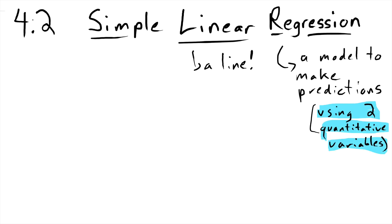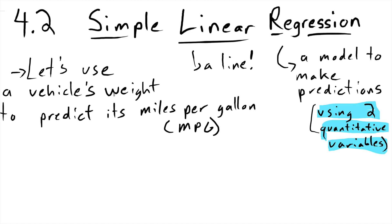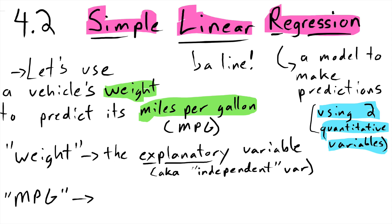So let's just jump right into the example I want to do. We are going to be using the weight of a vehicle, that's our first quantitative variable, to predict a vehicle's miles per gallon. And we're going to be looking at some data and creating what's called this simple linear regression line. Weight is doing the explaining, miles per gallon is doing the responding.